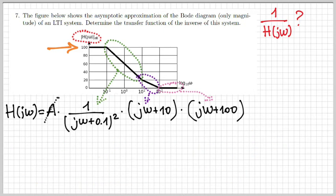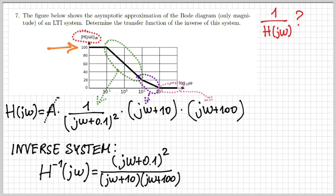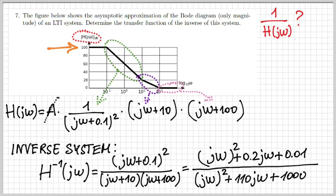We can replace A equal to one, and we've obtained the expression for H(jω). But we were looking for the inverse of the system. So what we need is the reciprocal, 1/H(jω), which we can write by inverting the fraction. Here's the final expression.